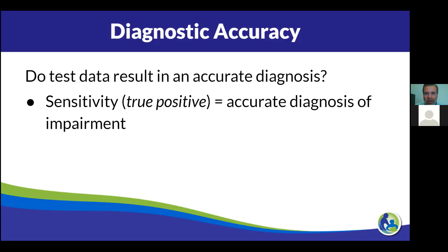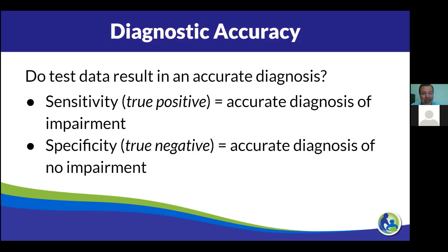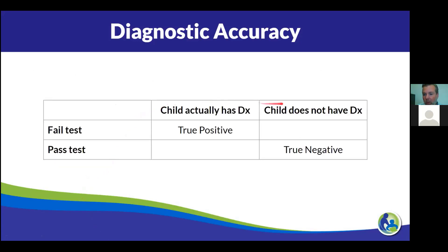One thing we look at is called sensitivity — are we accurately able to diagnose students who have impairments? Specificity is the other way — are we able to accurately not diagnose people who do not have impairments? If we have some way of knowing that a child has a diagnosis or does not, we hope our tests are consistent with that. If they fail a test, we hope that child actually has the diagnosis. If they pass the test, we hope that child does not have a diagnosis.